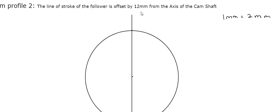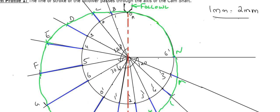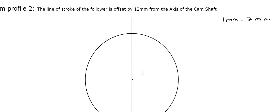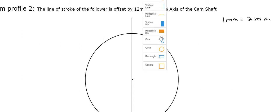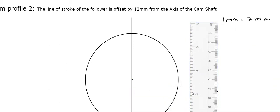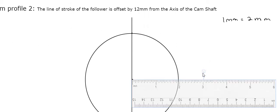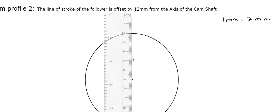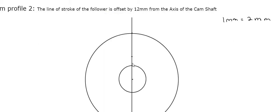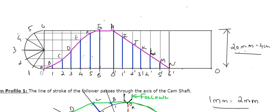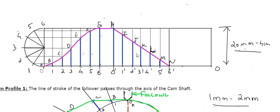The line of stroke of the follower is offset by 12 mm — previously it was passing through the center of the cam. Now it is offset by 12 mm, so you have to draw another circle with that radius. Since the offset is 12 mm, you draw a circle of 12 mm, and according to this scale of 2:1 that becomes 24 mm on the drawing. So let us mark 24 mm to draw that offset circle.